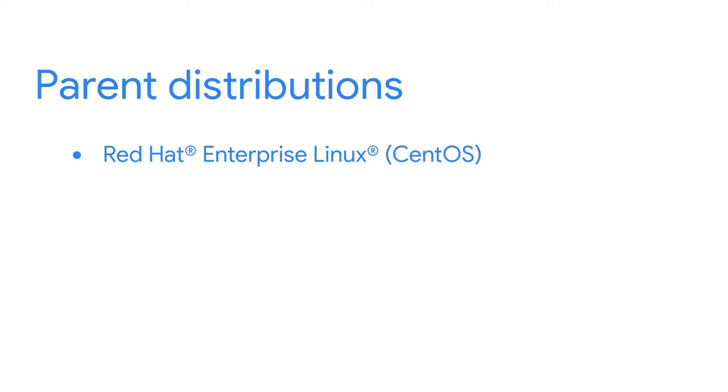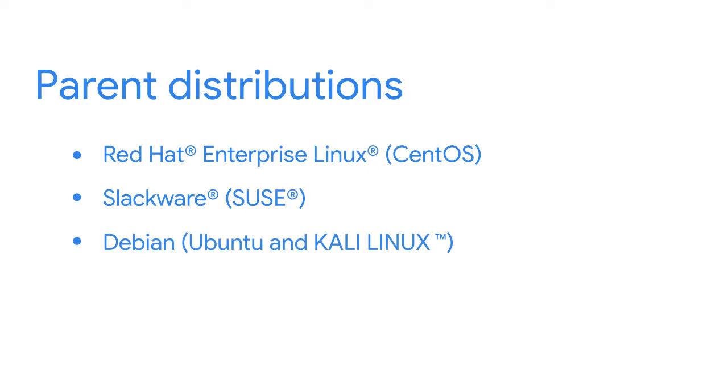The advantage of using Linux as an OS is that you can customize it. Distributions include the Linux kernel, utilities, a package management system, and an installer. Linux is open source and anyone can contribute to adding to the source code — that is how new distributions are created. All distros are derived from another distro, but there are a few that are considered parent distributions. Red Hat is the parent of CentOS and Slackware is the parent of SUSE. Both Ubuntu and Kali Linux are derived from Debian. We're going to take a look at some of the distributions most commonly used by security analysts.